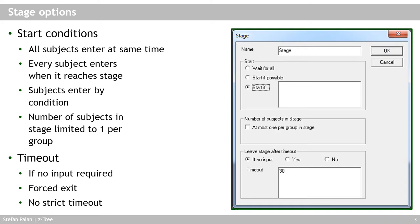I recommend using a variable from the globals table instead of a hard-coded number for the timeout value, because this way you can use the period settings in the parameter table to adjust the time even during the experiment. I prefer to have all my timeout settings in one table in the background of the stage, which is much more convenient than going through all the stages. If you set the timeout to minus one, the stage runs forever — the timer does not count down and you need subjects to press a button or use the leave stage variable to exit.